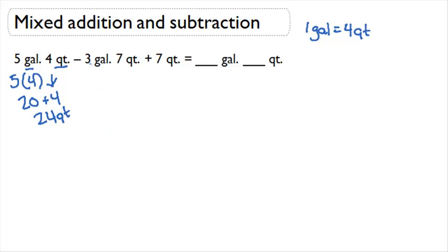The second number is 3 gallons and 7 quarts. Again, 1 gallon is worth 4 quarts. So this is 3 times 4 quarts in each gallon, which is 12, plus the 7 that we already had. 12 plus 7 is 19 quarts.